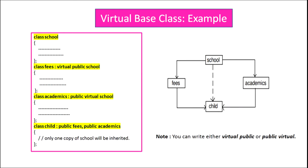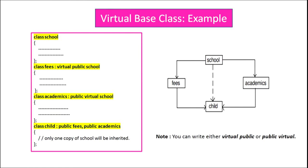Here is how to implement the virtual base class in C++. First, we create class school, then class fees which inherits publicly from school — we write the keyword virtual before it to declare it as a virtual base class. Then we create class academics which also inherits publicly from school with the virtual keyword (we can write either virtual public or public virtual — both are the same). Finally, we create class child inheriting fees and academics publicly. Since school is inherited virtually, multiple copies of its members will not exist in class child.